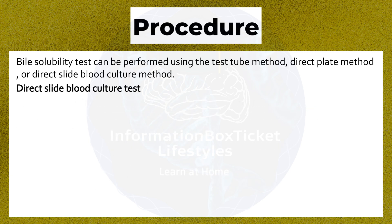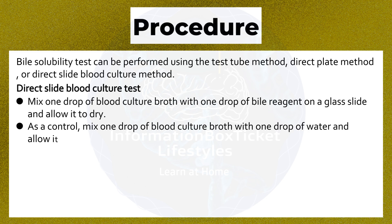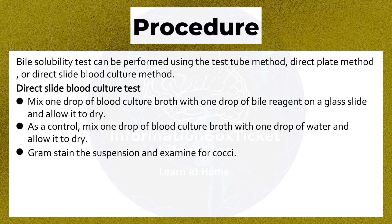Direct Slide Blood Culture Method: Mix one drop of blood culture broth with one drop of bile reagent on a glass slide and allow it to dry. As a control, mix one drop of blood culture broth with one drop of water and allow it to dry. Gram stain the suspension and examine for cocci.